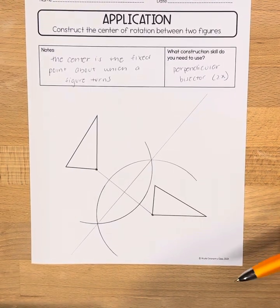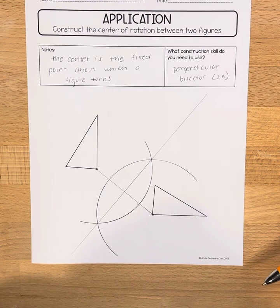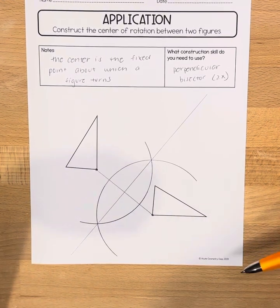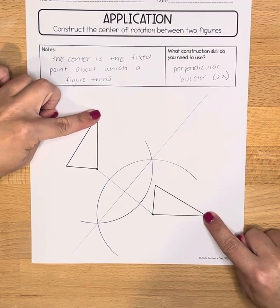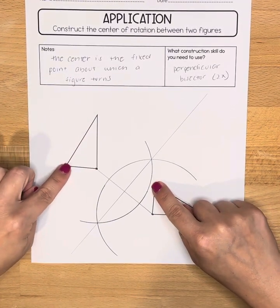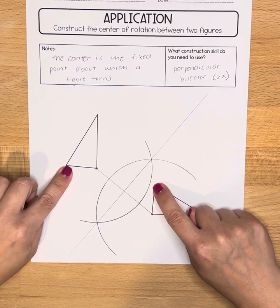Now I basically want to repeat this process, but I want to do it with another pair of corresponding points. So I could pick these two. Or I could pick these two. I like these two a little bit better.